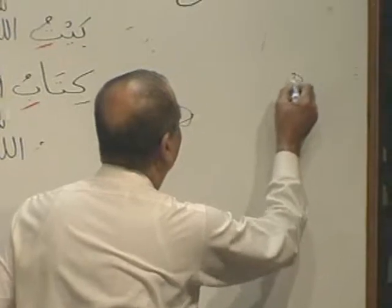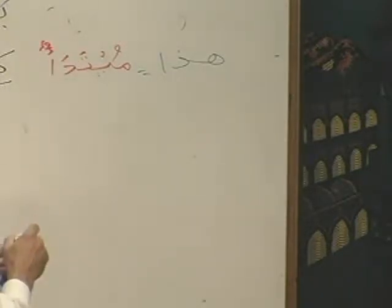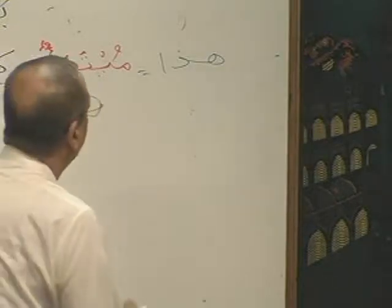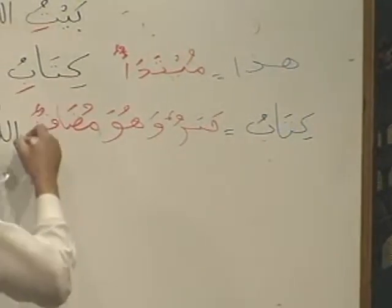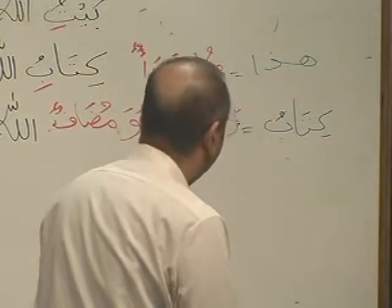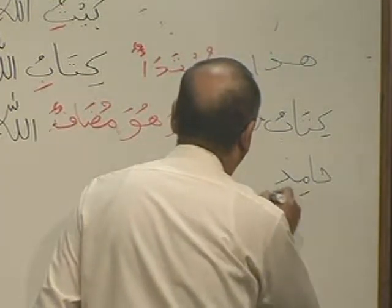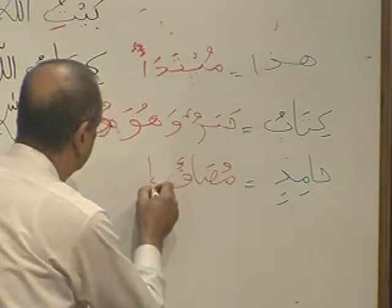What is Hadha? Mubtada. What is the next one? Kitabu — Khabarun. And it is Mudaf. What is Hamid? Mudaf Ilaihi. This is a simple analysis. The detailed one we will learn in Book 3, inshallah. On page number 23 of your handout we have given you four pages of simple analysis — you can see them from time to time.